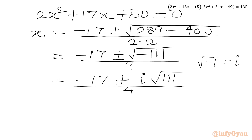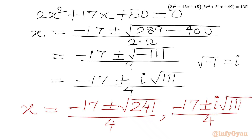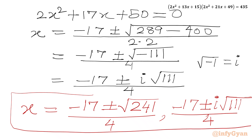So we have in total 2 real and 2 complex solutions. The real solutions are x = (−17 ± √241) / 4, and the complex solutions are x = (−17 ± i√111) / 4. I hope friends you will like this video. Thank you so very much for watching — don't forget to like, share, subscribe, and support our video. Bye bye, take care!